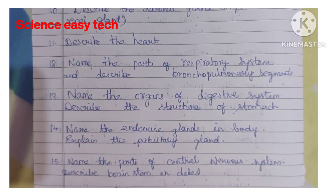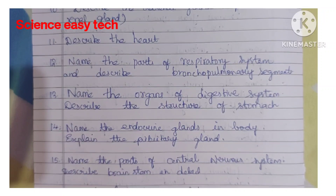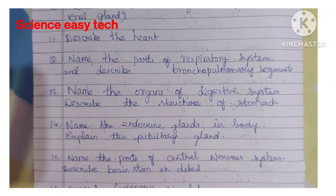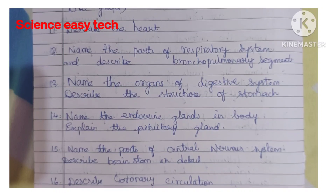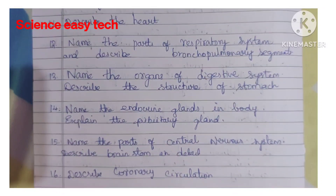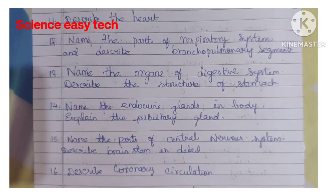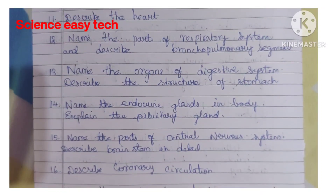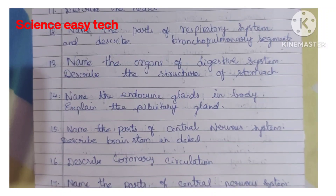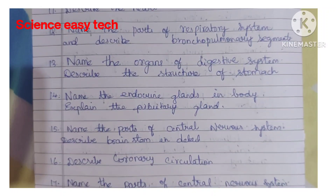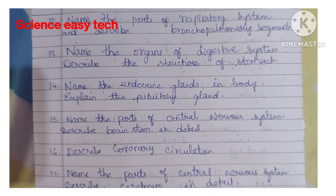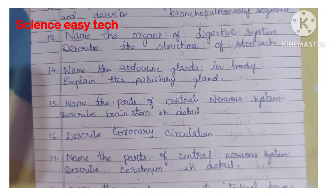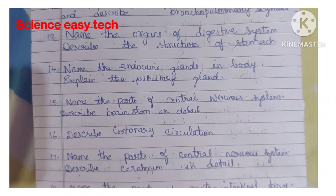Thirteenth question, describe the organs of digestive system and describe the structure of stomach. Fourteenth question, name the endocrine glands in body and explain the pituitary gland. Fifteenth question, name the parts of central nervous system and describe brainstem in detail. Sixteenth question, describe coronary circulation.